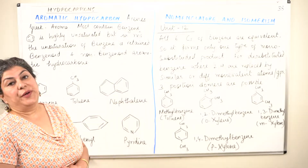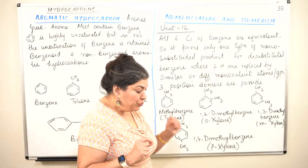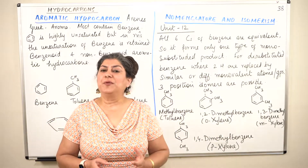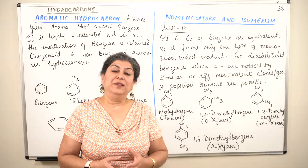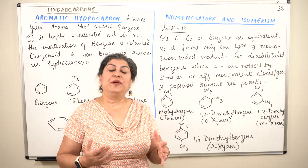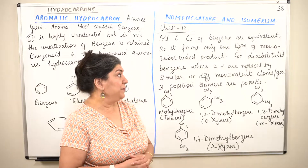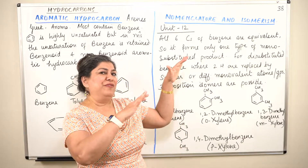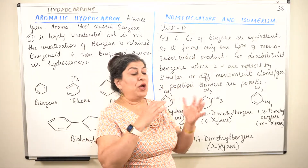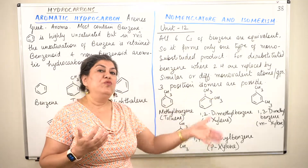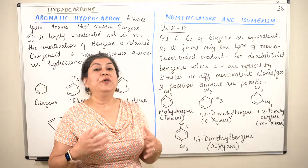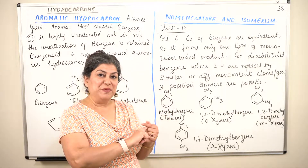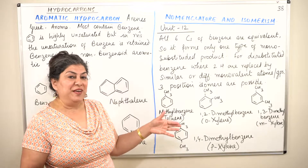Now we come to nomenclature and isomerism. In unit 12, where we introduced organic chemistry — some basic principles and techniques — nomenclature and isomerism has been explained to a great extent. I would encourage you to watch the videos of that chapter, because I'm not going to be repeating all of that. We are going to move ahead assuming you already know it, so please watch chapter 12 before doing the chapter on hydrocarbons.